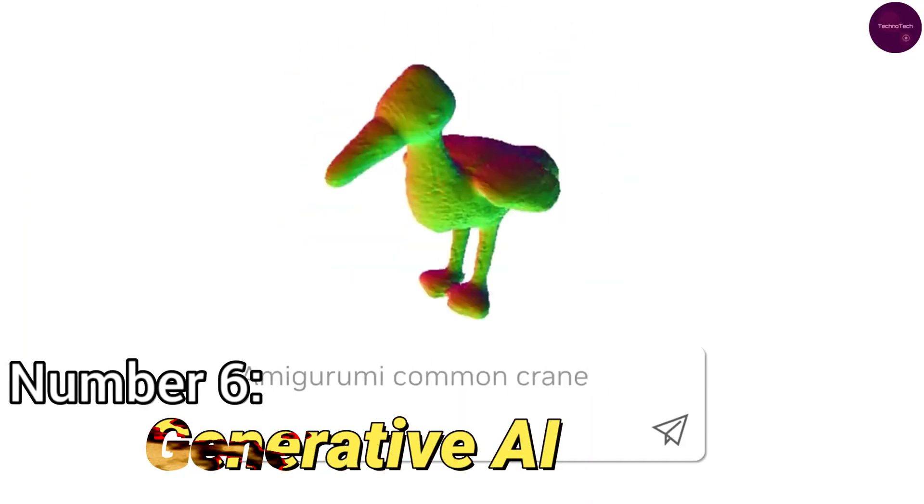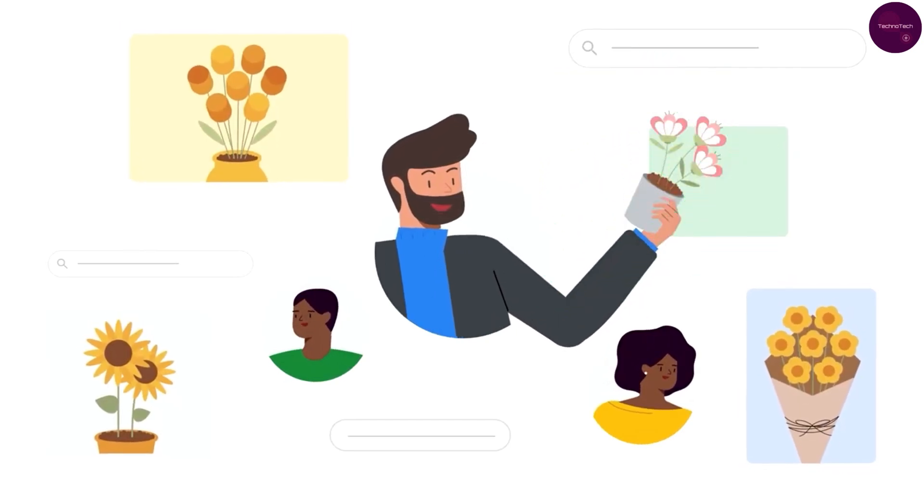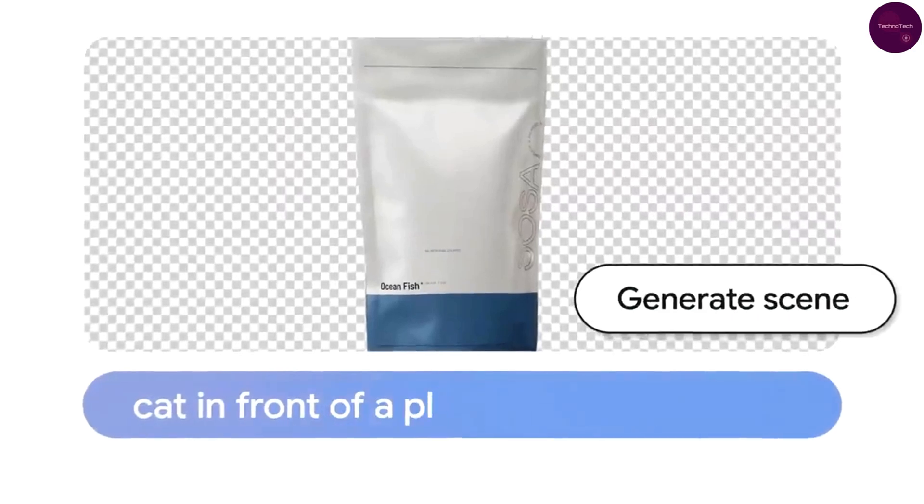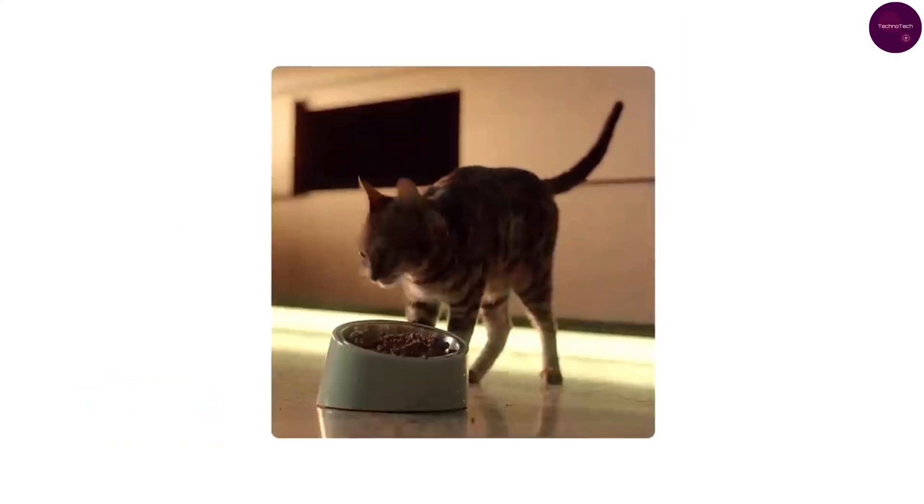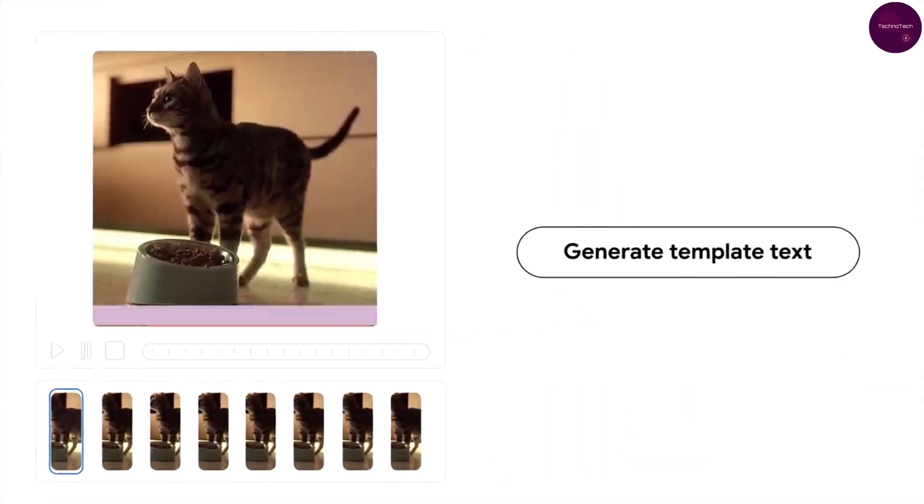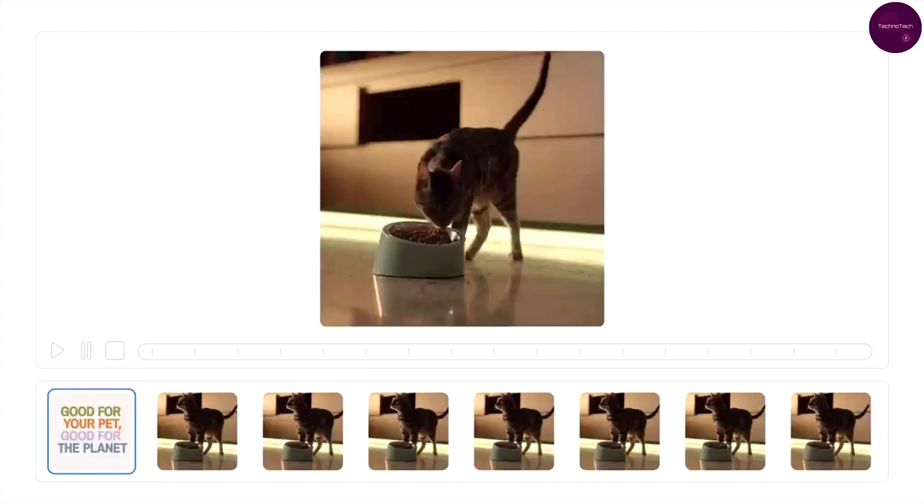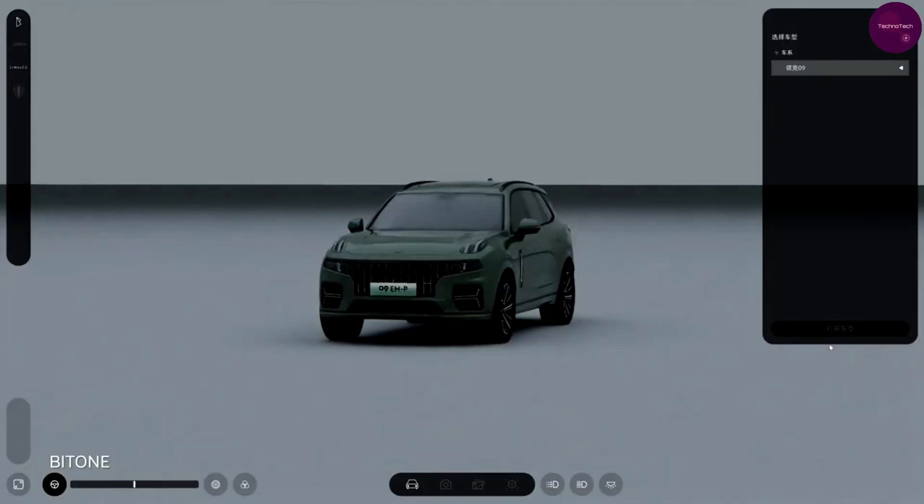Number 5: Generative AI. Coming in at number 5 is Generative AI, a branch of artificial intelligence focused on creating new content. From writing assistance and image generation to video creation, Generative AI is pushing the boundaries of creativity and innovation. But beyond simply mimicking human creativity, it has the potential to revolutionize industries ranging from entertainment to research and development.